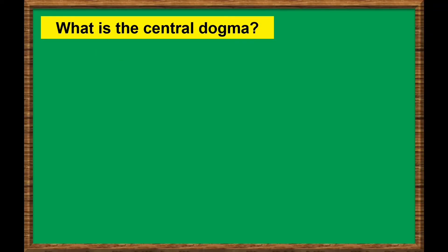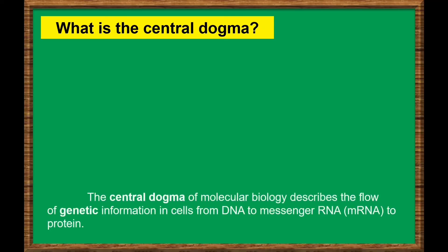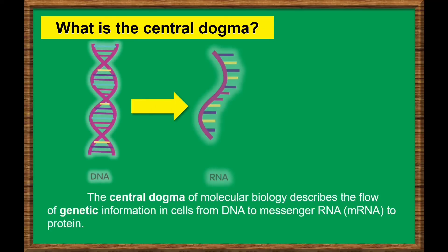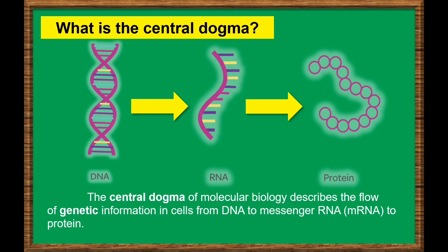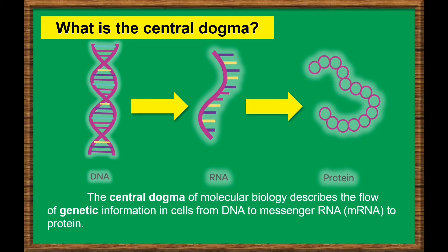What is the central dogma? The central dogma describes the processes turning DNA into a protein — called transcription and translation — that converts a gene on a strand of DNA into a functional protein that is capable of serving a variety of biological functions in the body. These processes occur continuously in the cells of our bodies in order to generate proteins that can do their respective jobs.